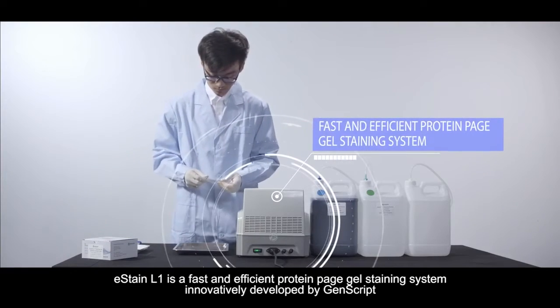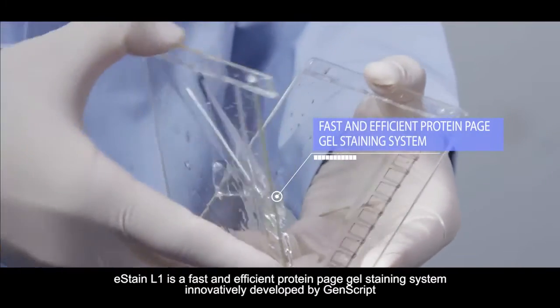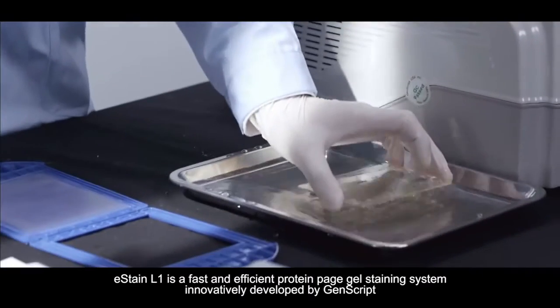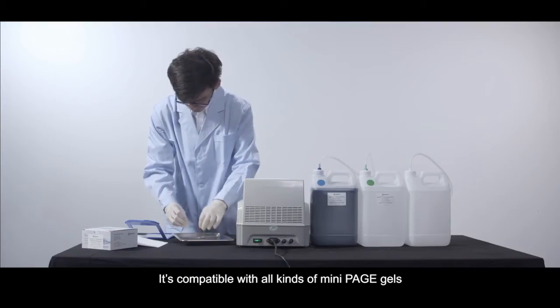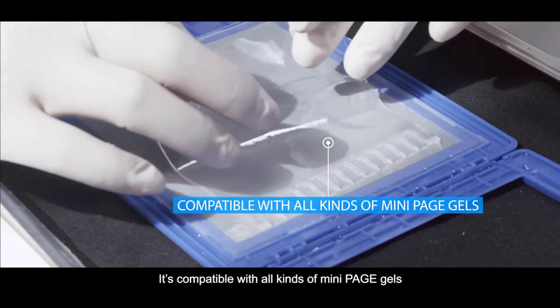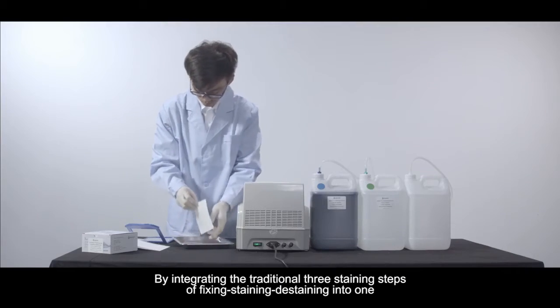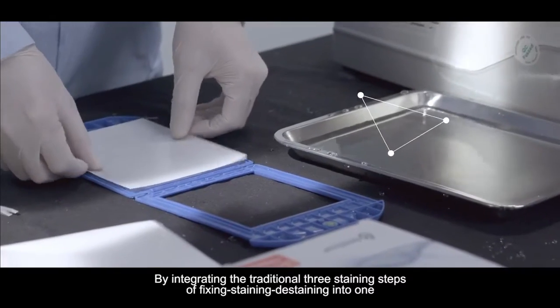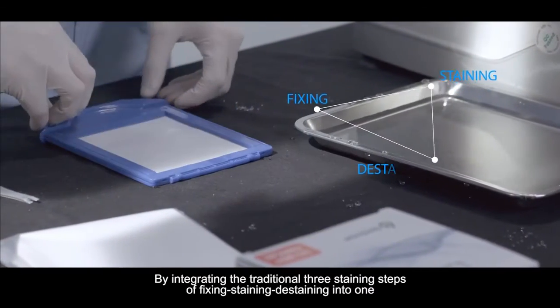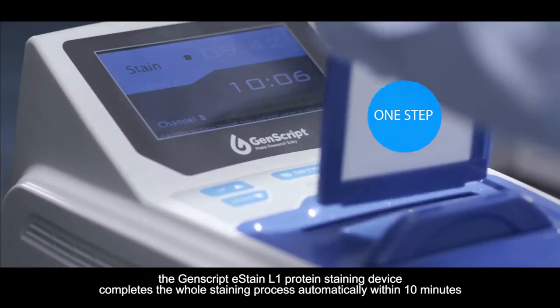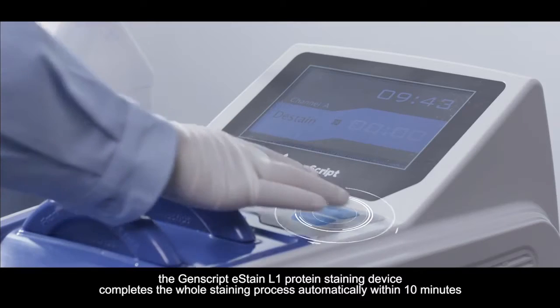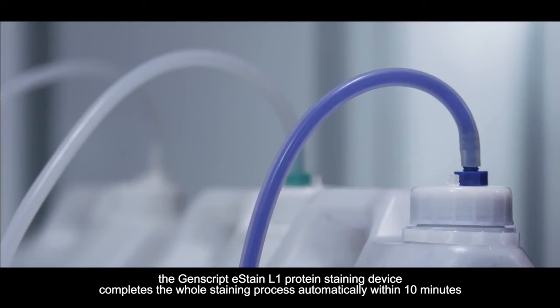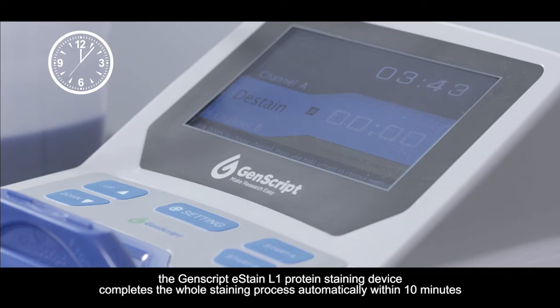eStain L1 is a fast and efficient protein page gel staining system, innovatively developed by Genscript. It's compatible with all kinds of mini page gels. By integrating the traditional three staining steps of fixing, staining, and de-staining into one, the Genscript eStain L1 protein staining device completes the whole staining process automatically within 10 minutes.